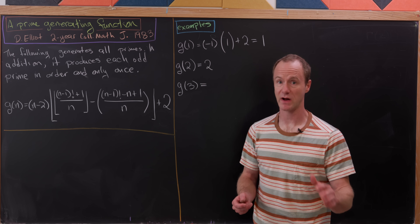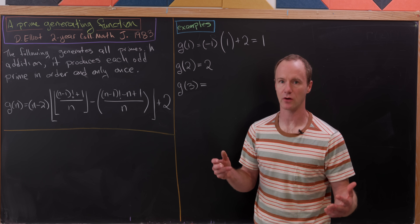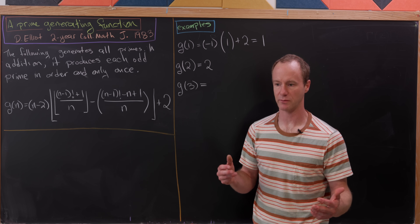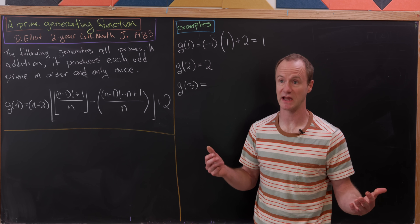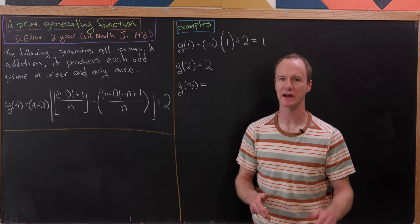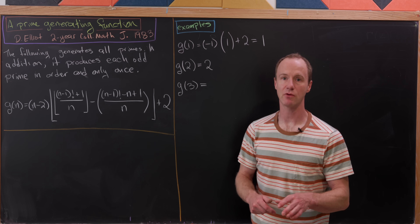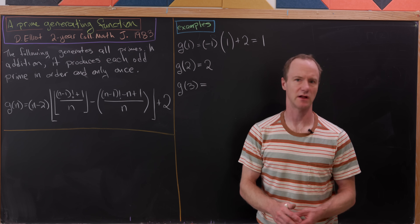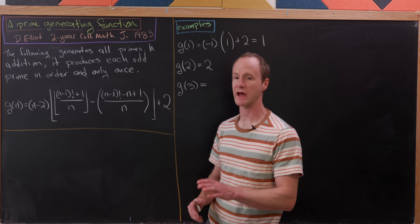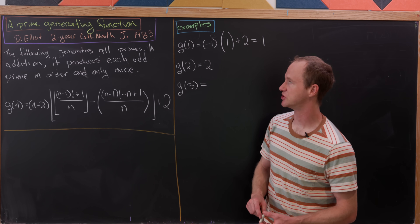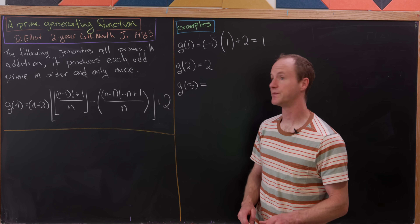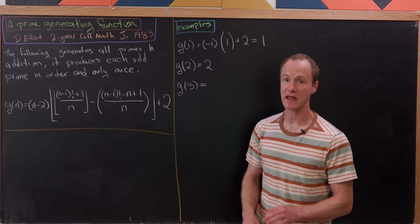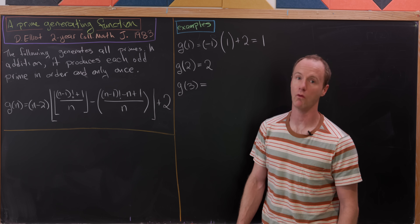When you input a composite number, you get a certain output. And when you input a prime number, you'll get a certain output that will tell you it's prime. We're adapting this from a nice article found in the Two-Year College Math Journal. The following function generates all primes. In addition, it produces each odd prime in order and only once.